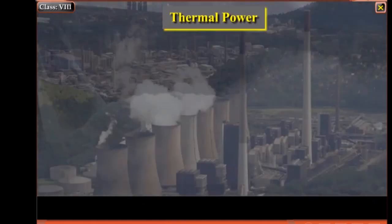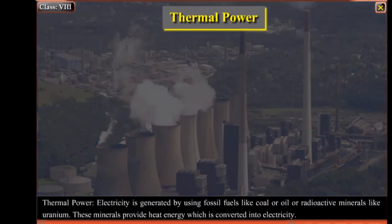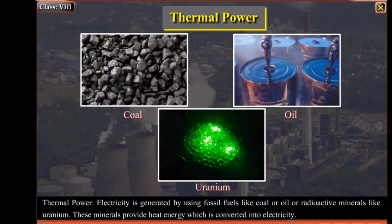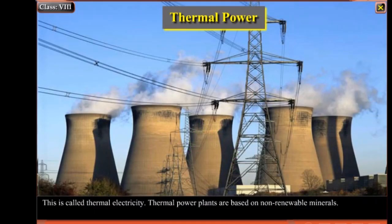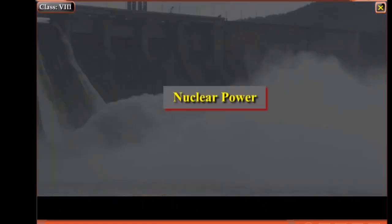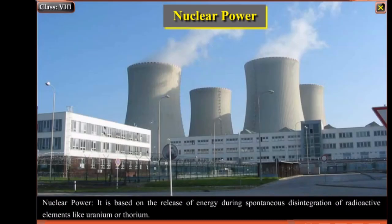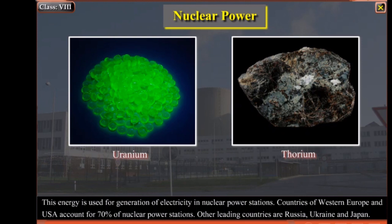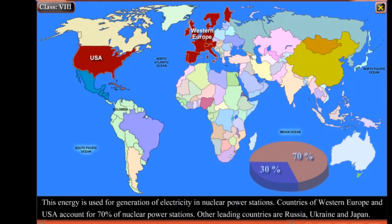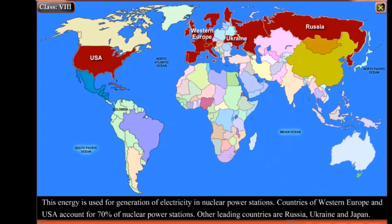Thermal Power: Electricity is generated by using fossil fuels like coal or oil, or radioactive minerals like uranium. These minerals provide heat energy which is converted into electricity — this is called thermal electricity. Thermal power plants are based on non-renewable minerals. Nuclear power plants are based on the release of energy during spontaneous disintegration of radioactive elements like uranium or thorium. This energy is used for generation of electricity in nuclear power stations. Countries of Western Europe and USA account for 70% of nuclear power stations. Other leading countries are Russia, Ukraine and Japan.